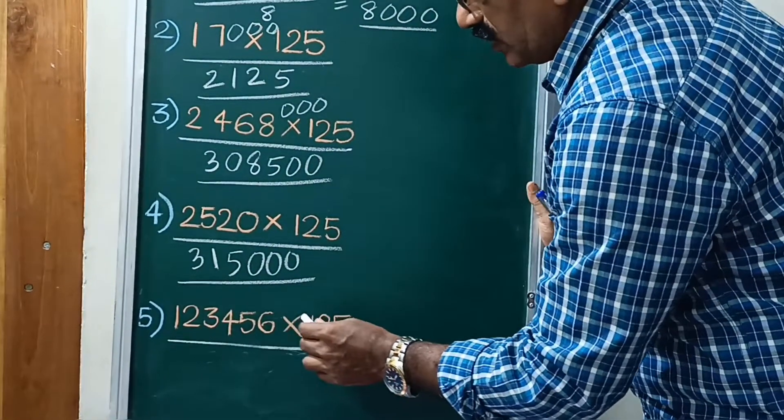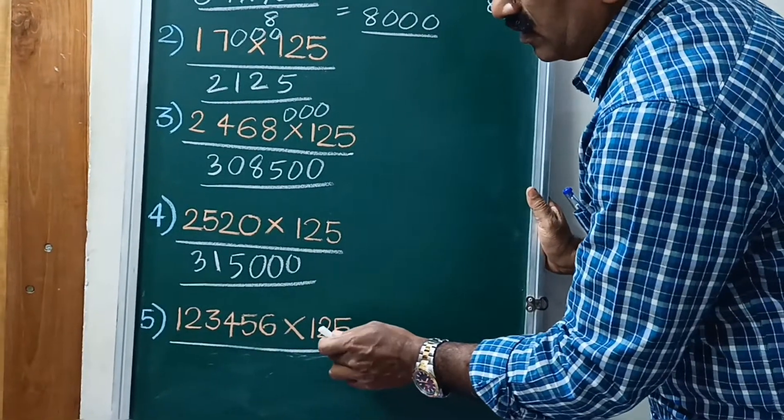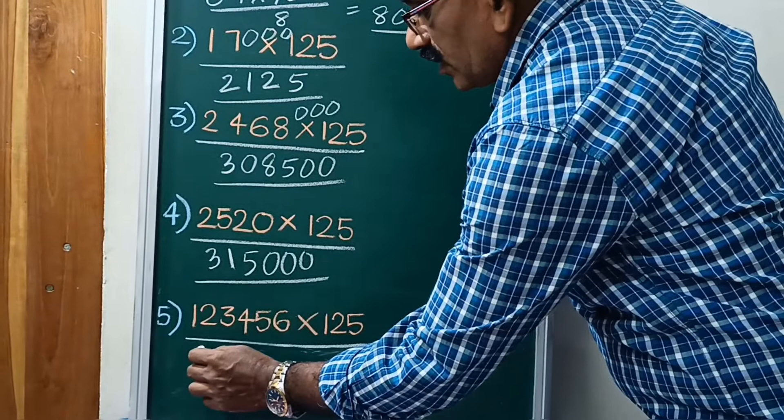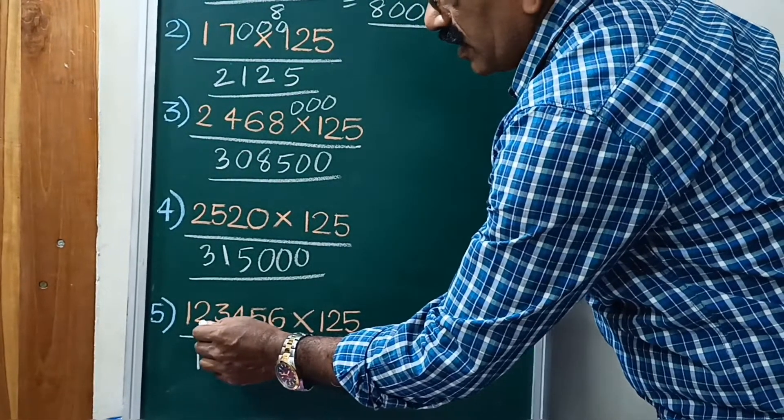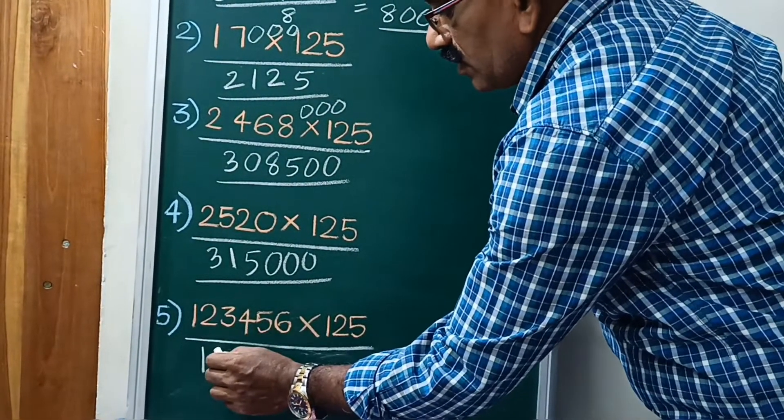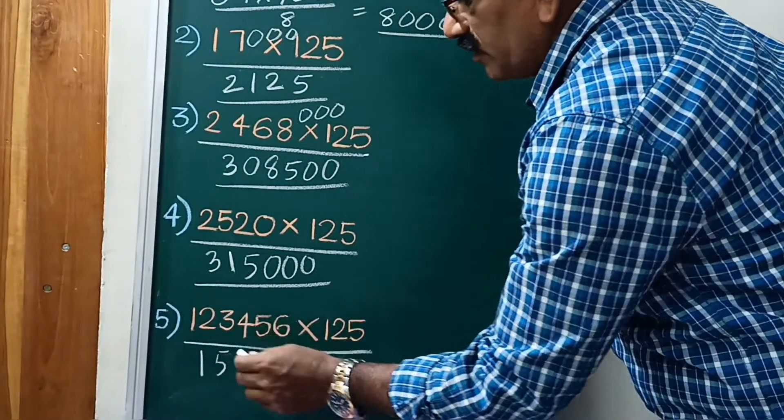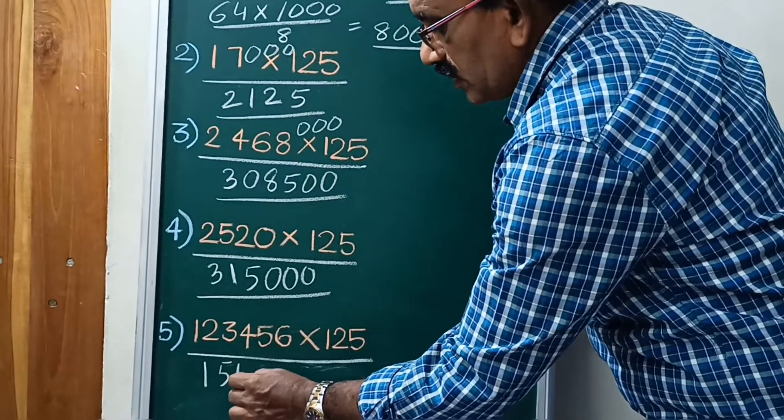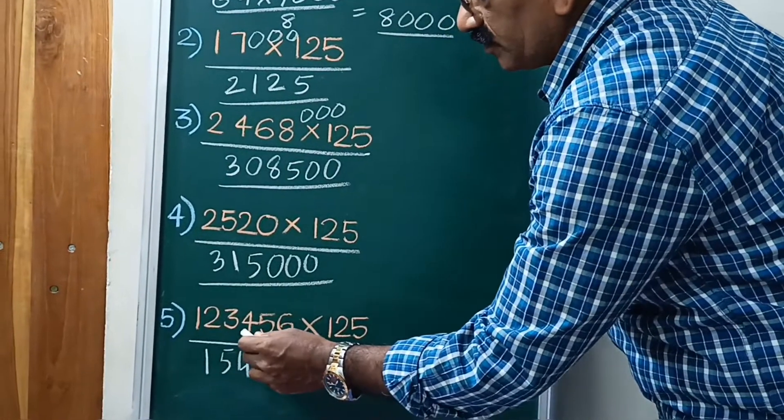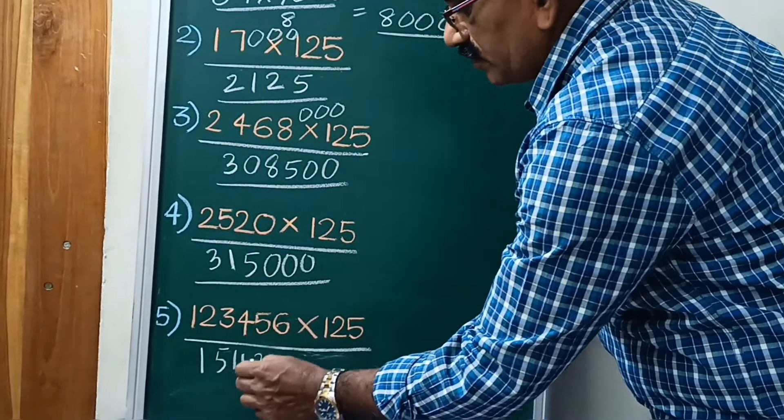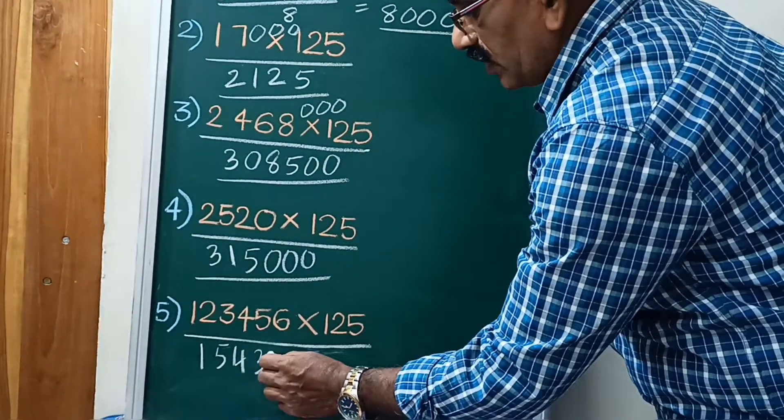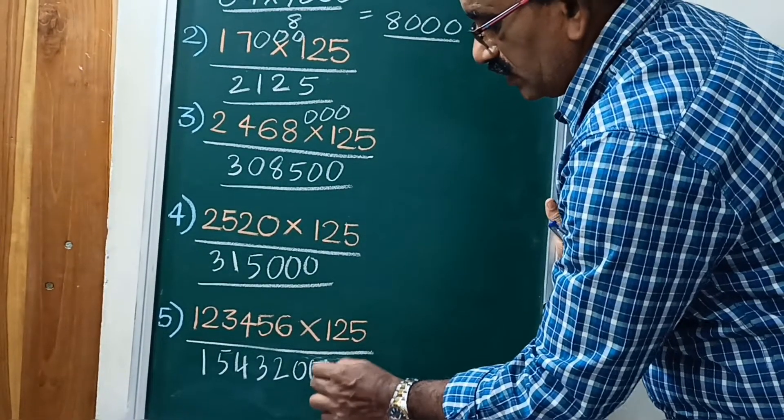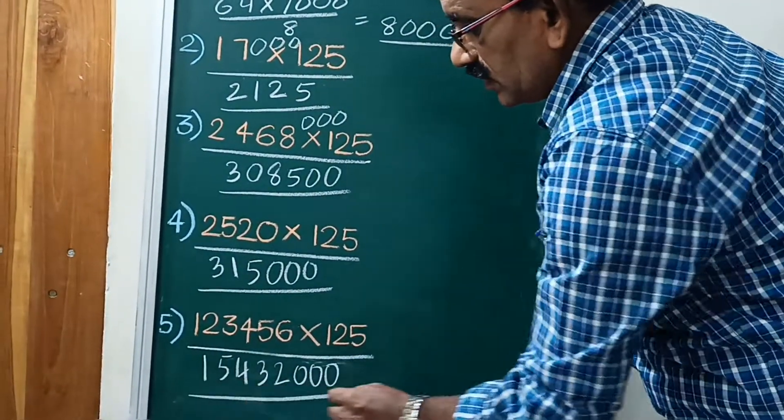123456 into 125. First divided by 8. 8 ones are 8, remainder 4. 8 fives are 40, remainder 3. Next 8 fours are 32, 8 threes are 24, 8 twos are 16. Next put it 3 zeros. That is the answer.